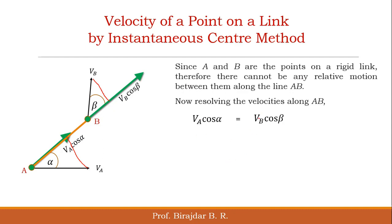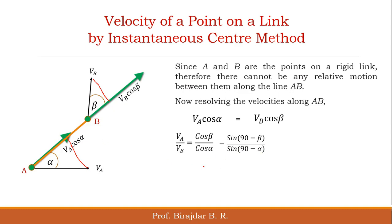Rearranging, we get VA divided by VB equal to cos(β) divided by cos(α). Converting to sine form: sin(90°−β) equals cos(β) and sin(90°−α) equals cos(α). This gives us Equation 1.